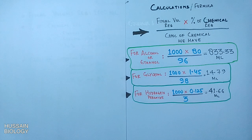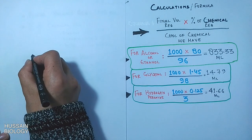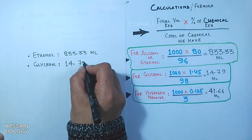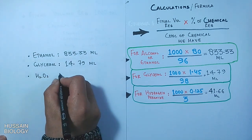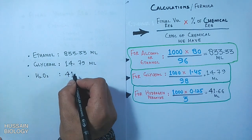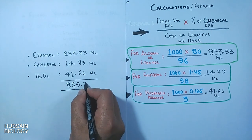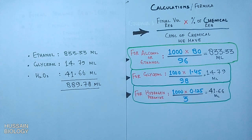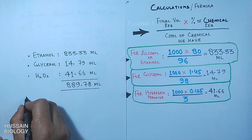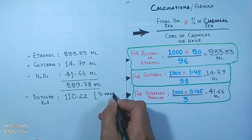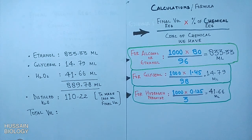Summing up: we need ethanol 833.33 ml, glycerol 14.79 ml, and hydrogen peroxide 41.66 ml. These three together make a volume of 889.78 ml. Since we need a final volume of 1000 ml, the remainder is made up by distilled water — 110.22 ml of distilled water is added to reach the final volume of 1000 ml.